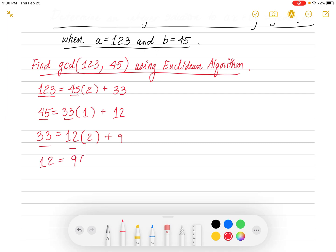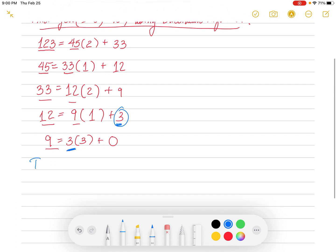Then we're going to take 12 and divide 9 into that. That just goes in once, and you're going to have a remainder of 3. 12 minus 9 is 3, and I'm going to underline the 12 and the 9. I'm going to take 9, divide 3 into that, and that happens 3 times. The quotient is 3, and you're going to get a remainder of 0. Since the remainder is 0 here, this 3 right here is your GCD. The GCD of 123 and 45 is 3.